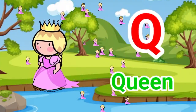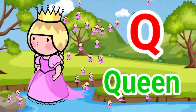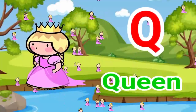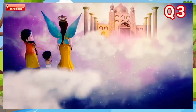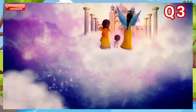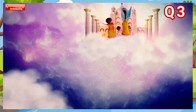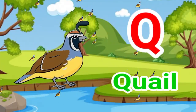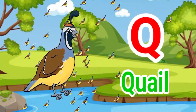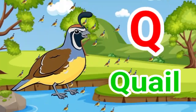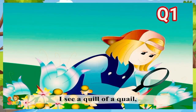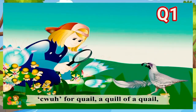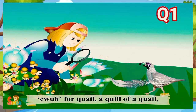Q. Q for queen. Queen means rani. Q. Q for quail. Quail means bater. I see a quill of a quail. Q for quail — a quill of a quail.